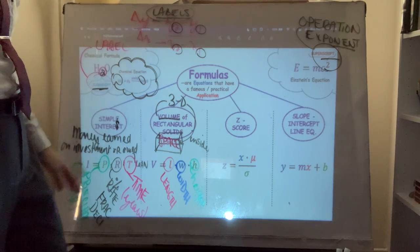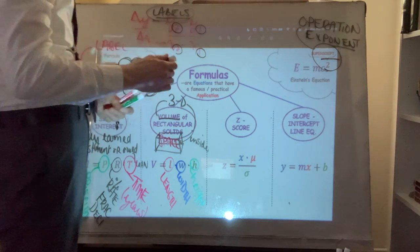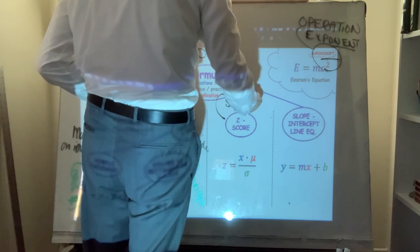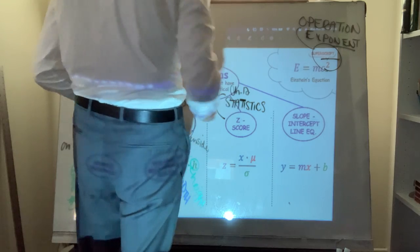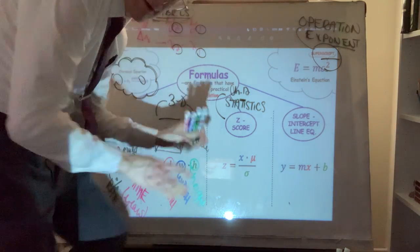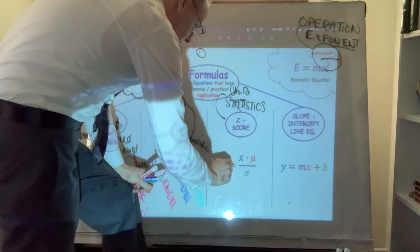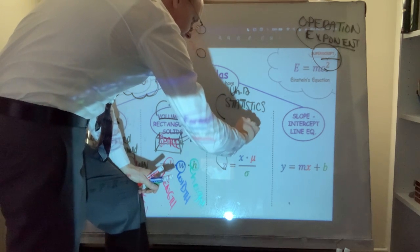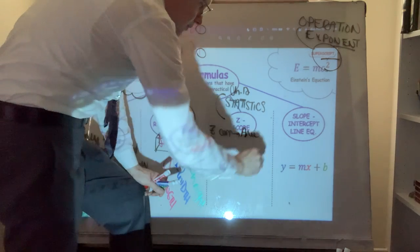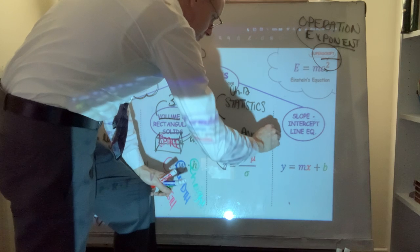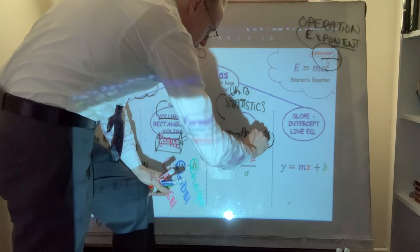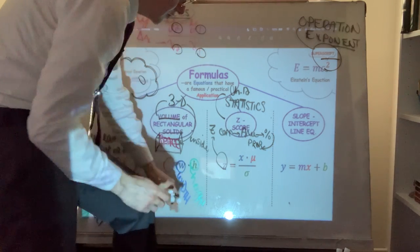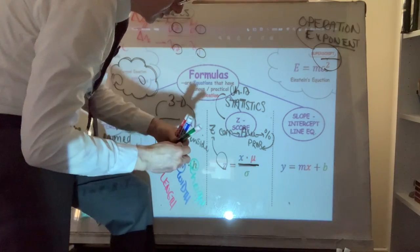When you get to the z-score, this is from statistics. This will be important when we get to Chapter 12. Essentially, a z-score corresponds to an area, the area corresponds to a percentage, and the percentage corresponds to a probability. It is in fact a ratio, as you can see from the formula.